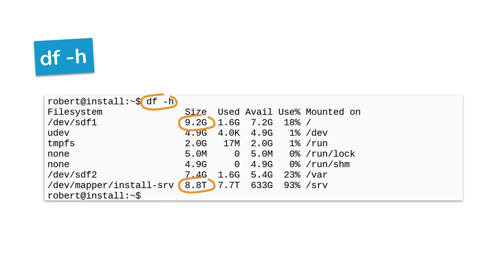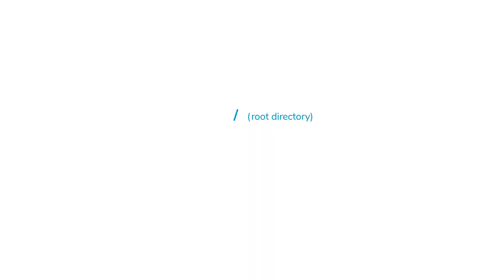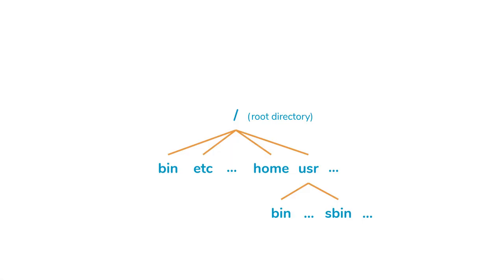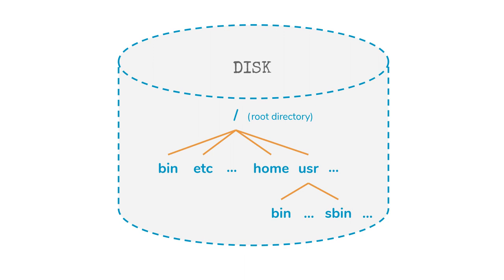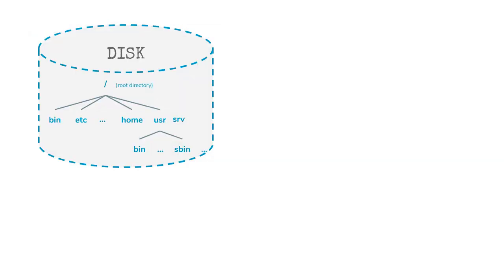To fully understand the df output, we need to talk about how disk space is made available on a Linux system. Every Linux system has a root directory named slash — a simple forward slash. From this root directory, every piece of disk space the system has is reachable by switching directories. Unlike Windows, there are no drive letters here — everything is one single directory tree starting with the root directory slash. Every system has this root file system, created at install time, typically located on a physical disk.